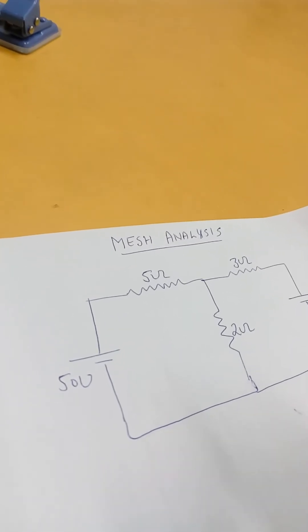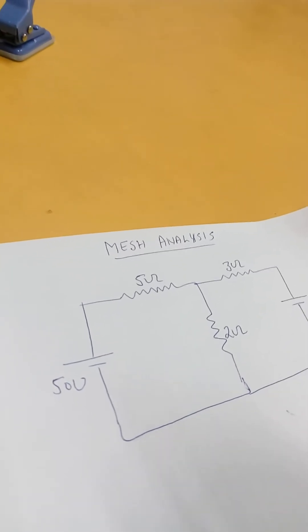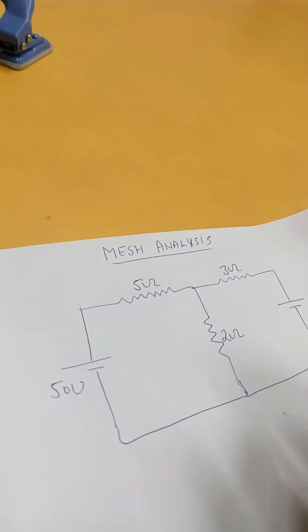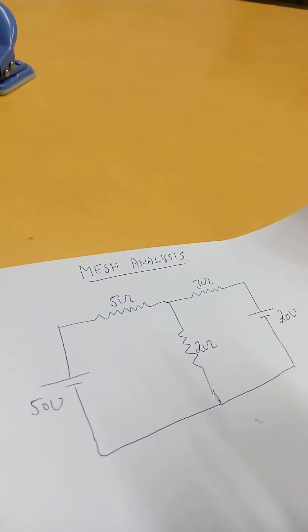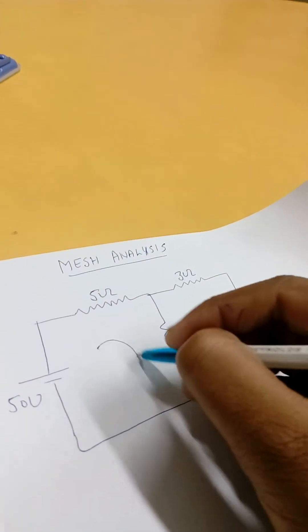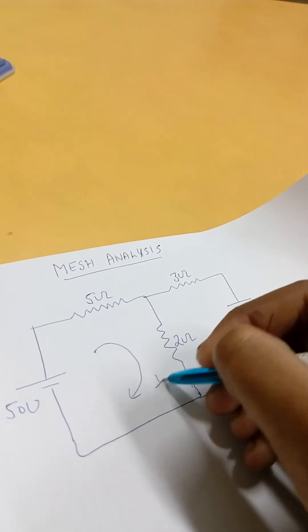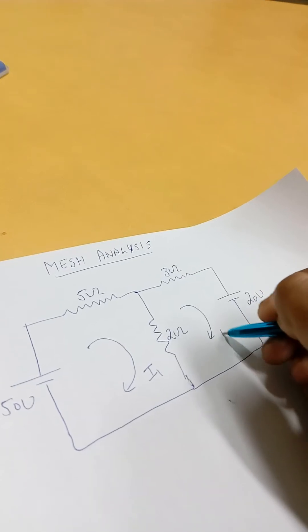Today we will learn about mesh analysis. The most simple way to solve mesh analysis we will discuss today. First of all, we will assign the currents I1, and in the second loop there is current I2.